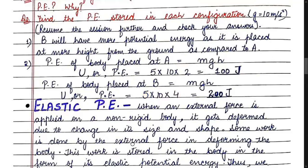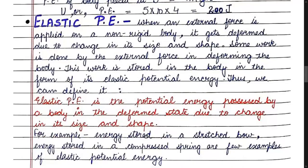Now let us come to the second type of potential energy: elastic potential energy. You must have taken a spring and applied force on it to elongate, stretch, or compress it. In that case, potential energy is stored in the form of elastic potential energy.